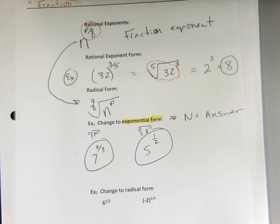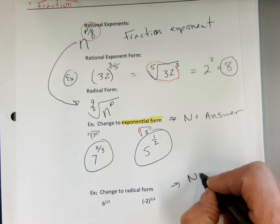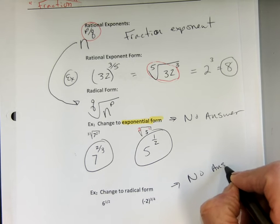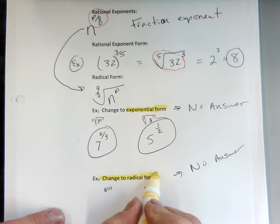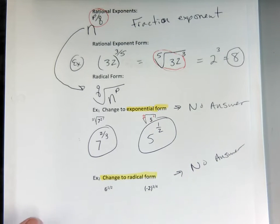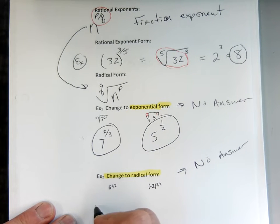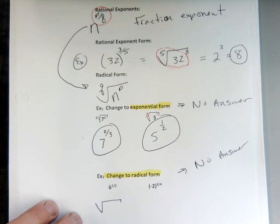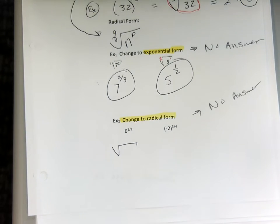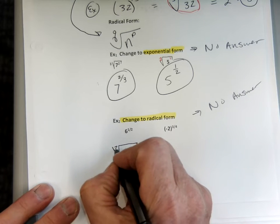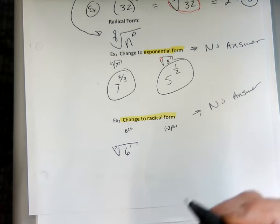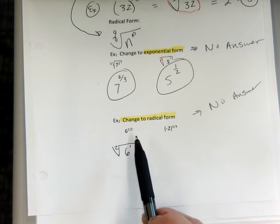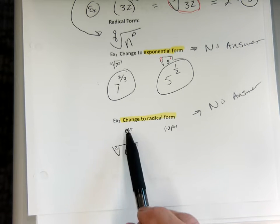Example 2 — same thing, no answer. We just want to rewrite it into radical form. A radical is the square root or cube root symbol. I'm going to put the 2 here as the root, and 6 to the 1 power. So the 2 is the root and the 1 is the power.